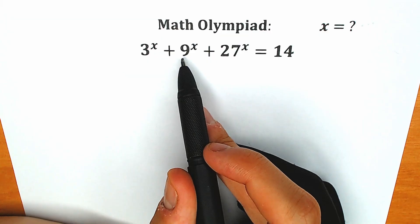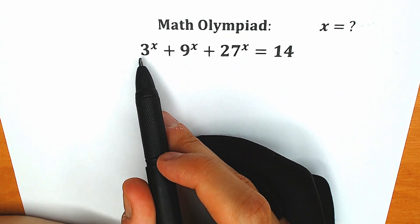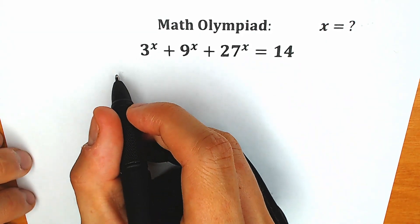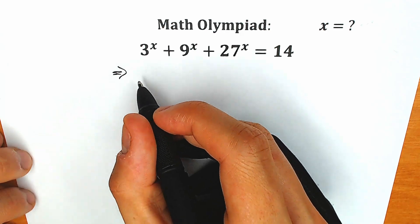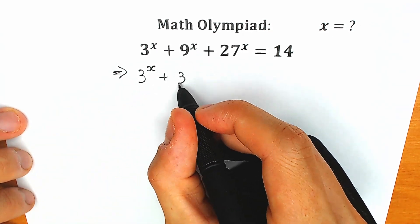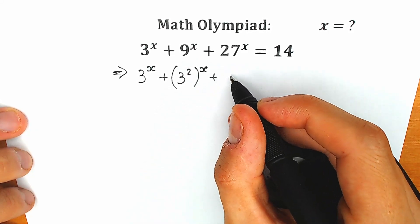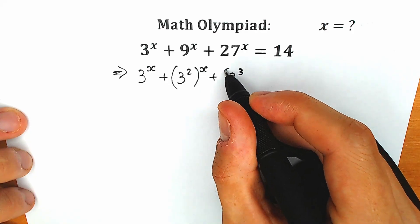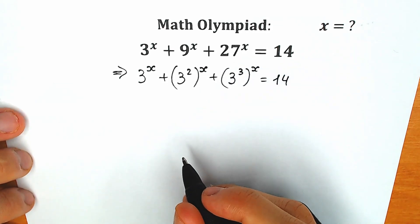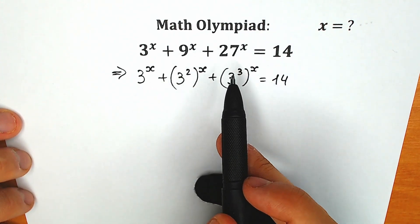First of all, 9 can be written as 3 squared, and 27 can be written as 3 cubed. So we can work with the same base — 3, 3, and 3. Let's express 9 as 3 squared. So we have 3 to the x, plus 3 squared to the power x, plus 3 cubed to the power x, equal to 14. We just change 9 by 3 squared and 27 by 3 cubed.